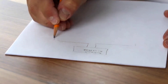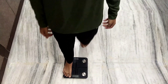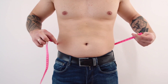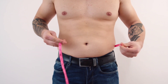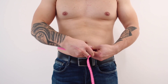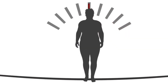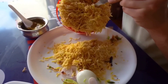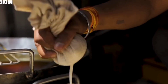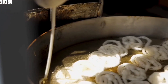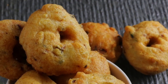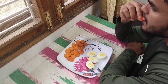Before answering what is the major factor in weight loss, we need to understand why we have gained weight. If you know the answer to this, it's easy to lose weight. Think about why you have gained weight — the answer is you ate more food, unhealthy food, and high calorie foods. That is the reason behind your weight gain.